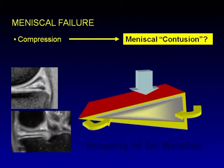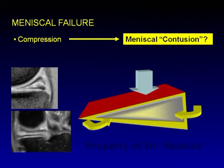Some believe that compression can also produce a meniscal contusion — hemorrhage and edema without surface violation. I will make this diagnosis if I know there has been a recent axial load and I see a lot of signal in the meniscus that doesn't reach the surface. The ideal circumstance is a patient with a tibial plateau fracture and, in the same compartment on MR, a meniscus with increased signal and no surface violation.